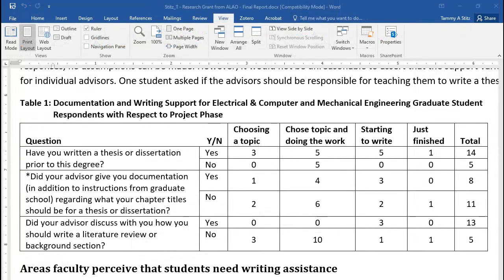As an example of qualitative research, a survey was sent to the engineering graduate students to determine what kind of help they needed with their theses and dissertations. There's a table: documentation and writing support for electrical and computer and mechanical engineering graduate student respondents with respect to project phase. The first question is, have you written a thesis or dissertation prior to this degree? The students can answer yes or no. This is categorizing students to whether they have written a thesis or dissertation previously. So this is qualitative information.